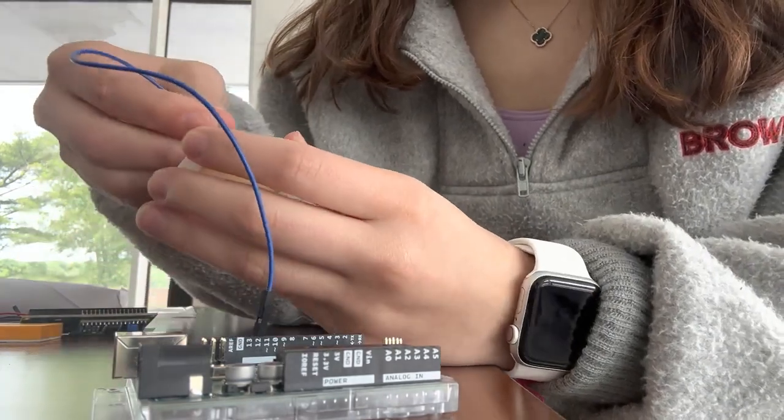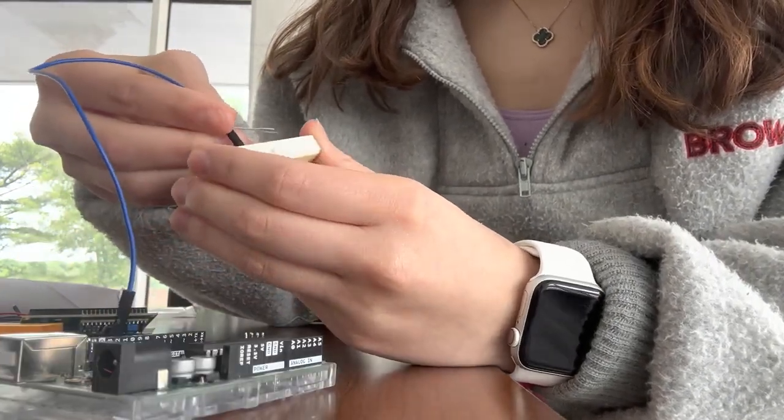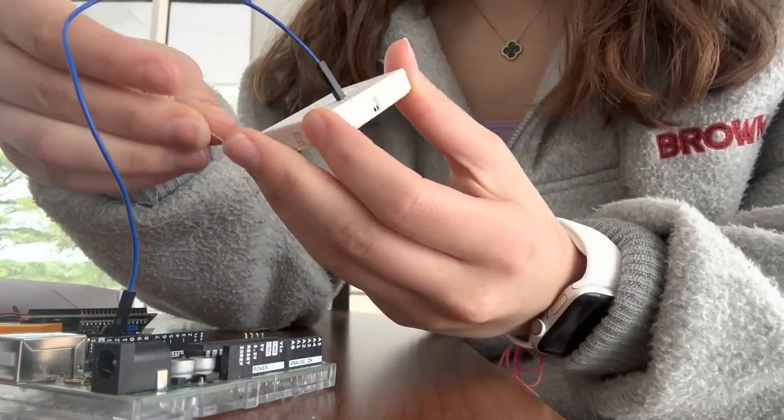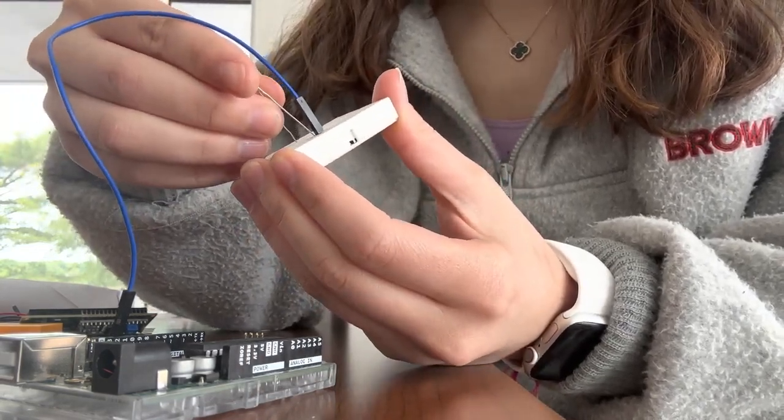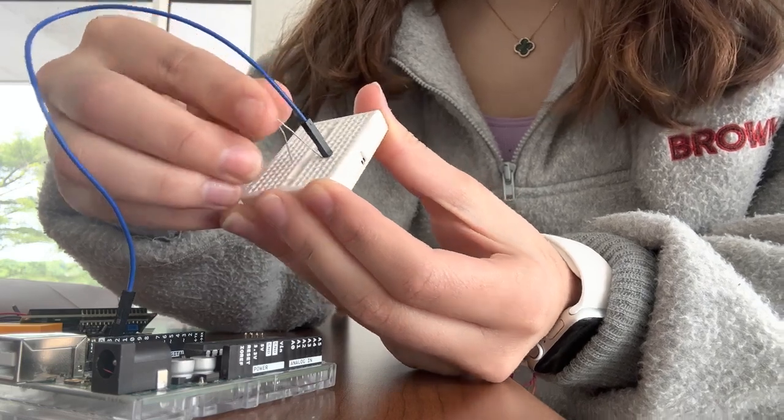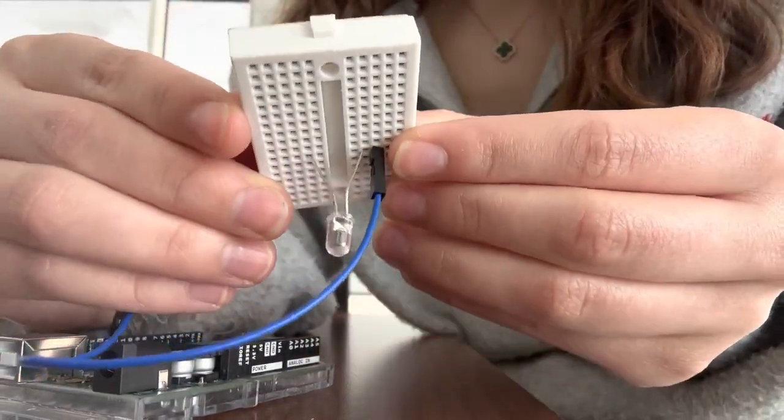You want to connect the positive side on the same line as your wire that's connected to D12, so connect your longer one there and your shorter one anywhere else on the board.